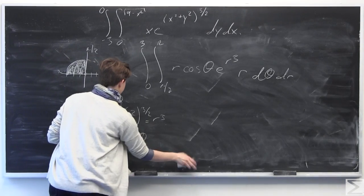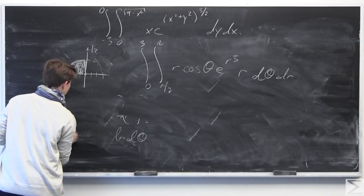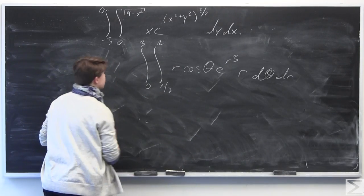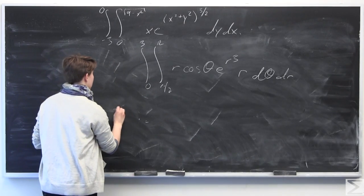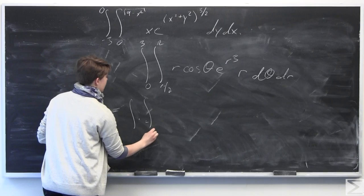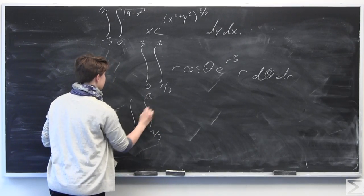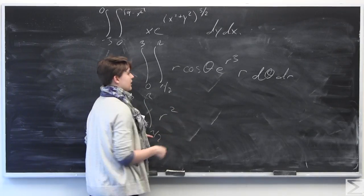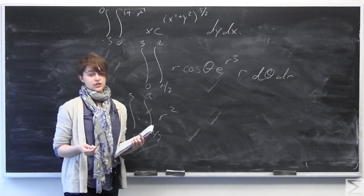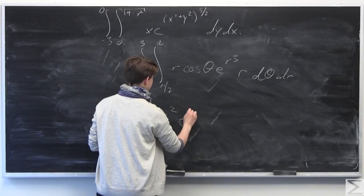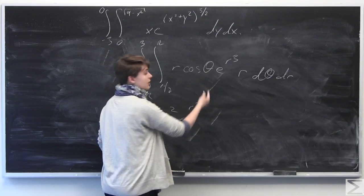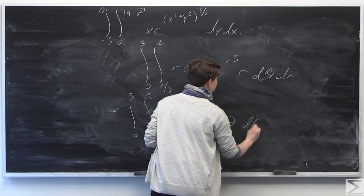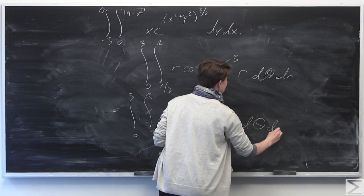We can simplify this down. With our bounds of integration set up, I'll rewrite this by combining the r terms. From pi over 2 to pi and 0 to 3, we have r times r — so r squared — times e to the r cubed. Grouping together the terms with r gives us r squared times e to the r cubed, times cosine theta, with the operator d theta dr.